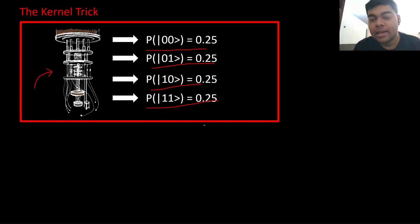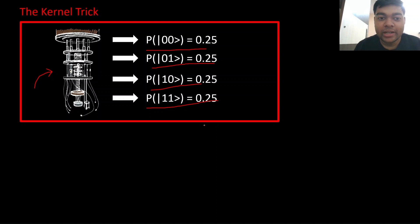So quantum SVM has two key features: one is using the kernel trick, and the second is using a quantum computer. These are the two things for quantum SVM.